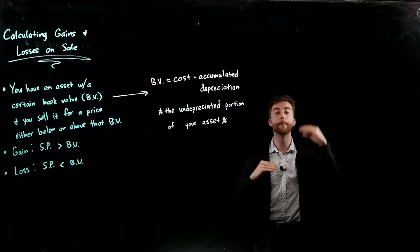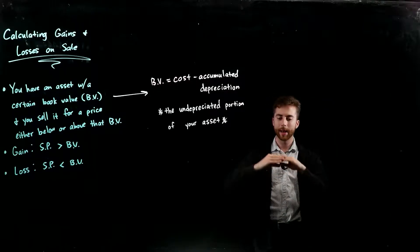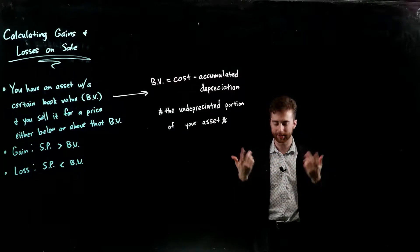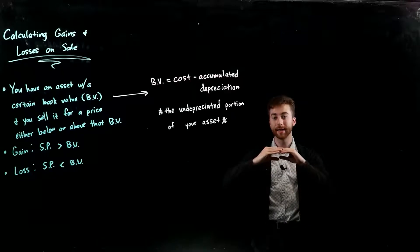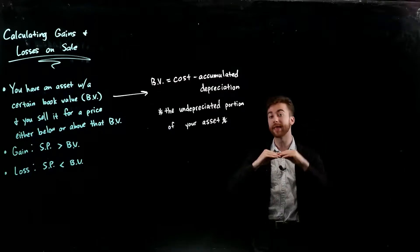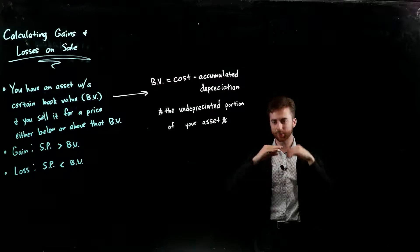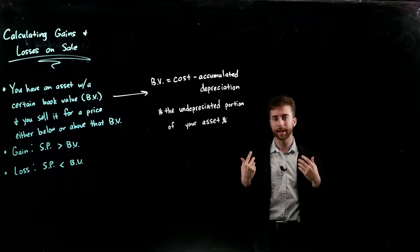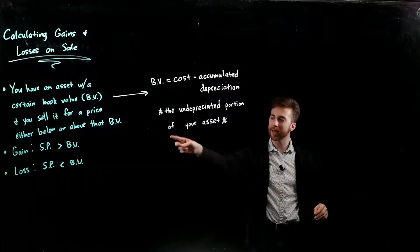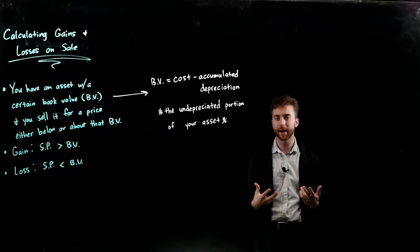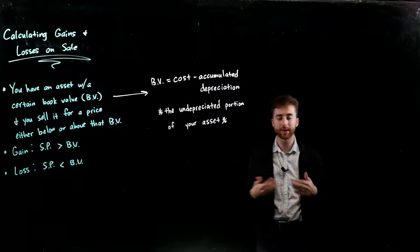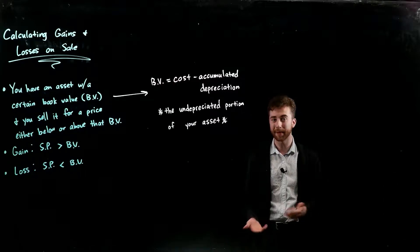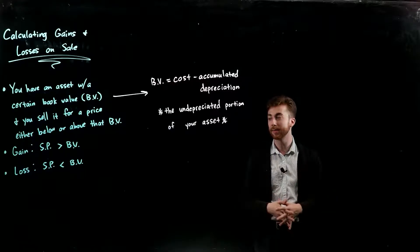If I sell that asset for a certain price, let's say it's above my book value - on my books it's worth, and again I use that sparingly because it's not actually what it's worth, but the book value itself is at a certain amount and I sell it for a price above that book value. Well, if it's worth a certain amount on my books and then I sell it for something that's higher than what it's worth, that's a gain for me. So if the selling price is greater than my book value, that would be considered a gain because what it's worth is less than what I got sold for. That's awesome - I got more cash than I expected to get based on the worth of my asset at that time.